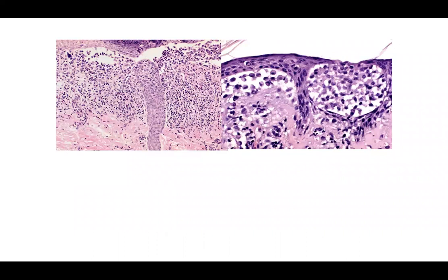Inflammatory or neoplastic? On the left you may struggle to determine if this is lichenoid inflammation with Max-Joseph spaces. Some cells look large with abundant cytoplasm. On the right you see what appear to be Langerhans cell microabscesses, which can occur in a spongiotic contact dermatitis.